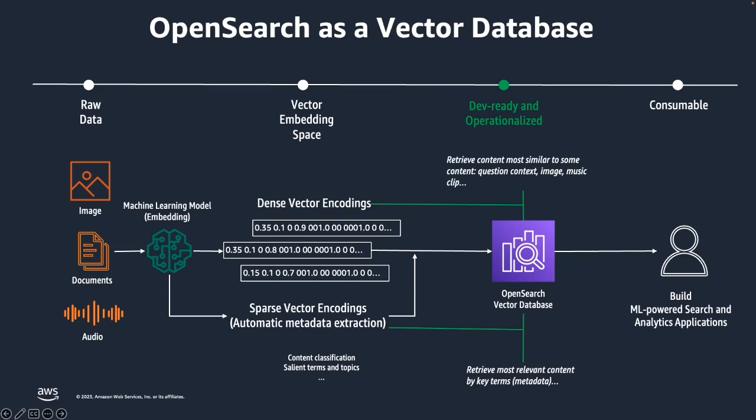OpenSearch utilizes algorithms such as FAISS and HNSW to build index structures for fast search retrieval. OpenSearch supports both KNN and ANN — approximate nearest neighbor — along with pre-filters to scale for query volume. OpenSearch as a database enables storage and retrieval of vectors using vector indices, allowing us to build ML-powered search and analytics applications.